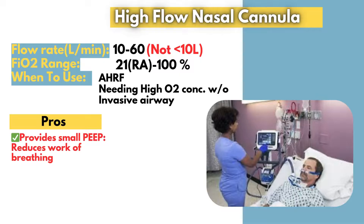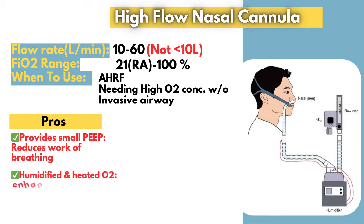One of the key benefits of the high-flow nasal cannula is its ability to wash out carbon dioxide from the nasopharyngeal dead space, improving gas exchange. Additionally, it provides a small amount of positive pressure similar to continuous positive airway pressure (CPAP). This effect is estimated at approximately 0.7 centimeters of water positive end-expiratory pressure (PEEP) for every 10 liters per minute of flow, helping to keep the airways open and reduce work of breathing. Another major advantage is comfort — because the delivered oxygen is both heated and humidified, patients tolerate it better than a simple face mask or a non-rebreather mask, reducing discomfort and dryness.